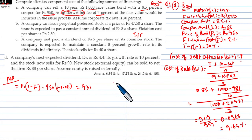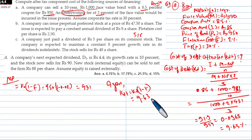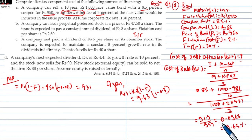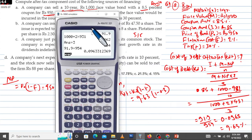Now, after-tax cost of debt: KDT is equal to KD multiplied by (1 minus t). That is 9.63 percent multiplied by (1 minus 0.3), since the tax rate is 30 percent, giving a factor of 0.7.